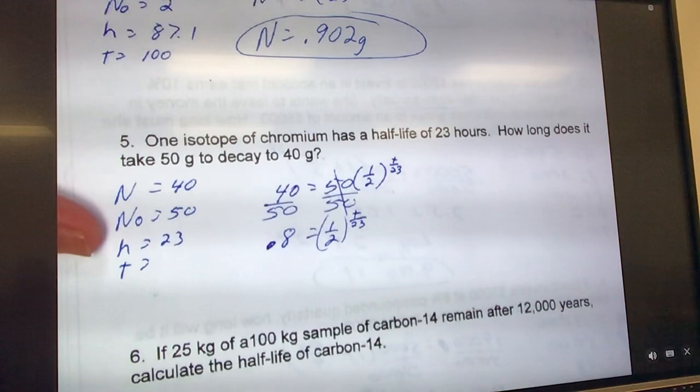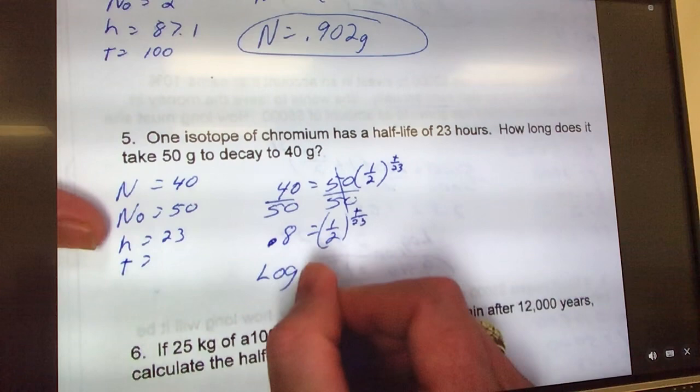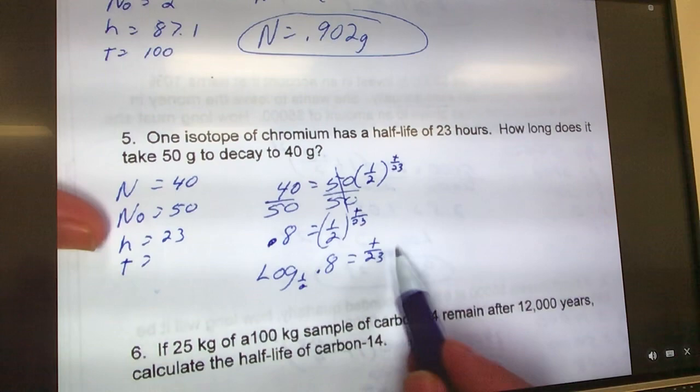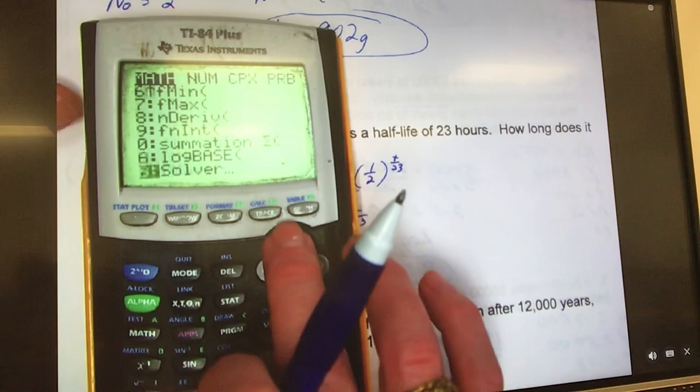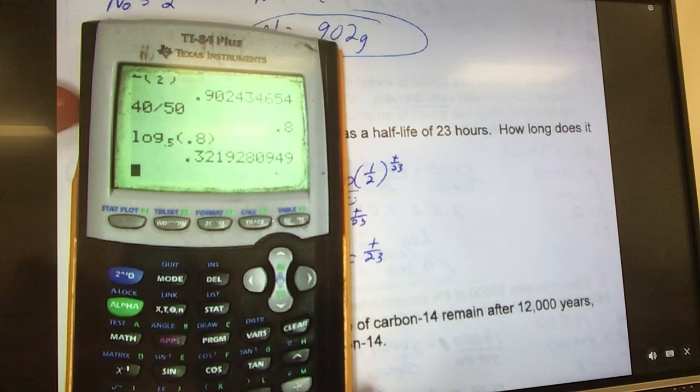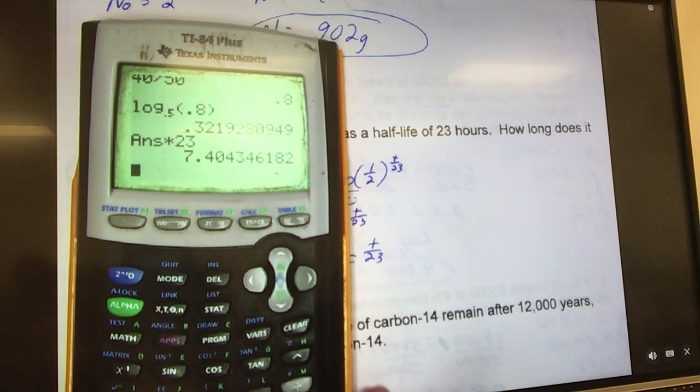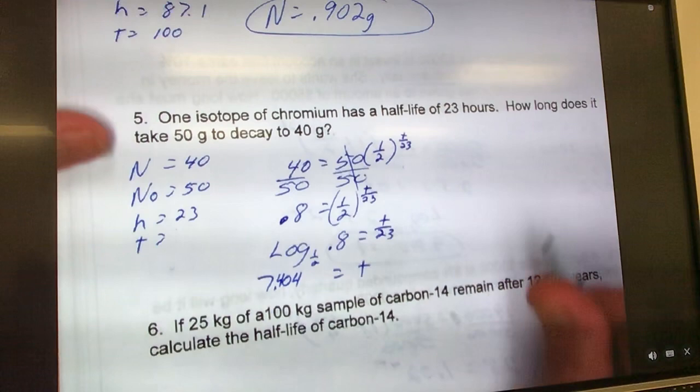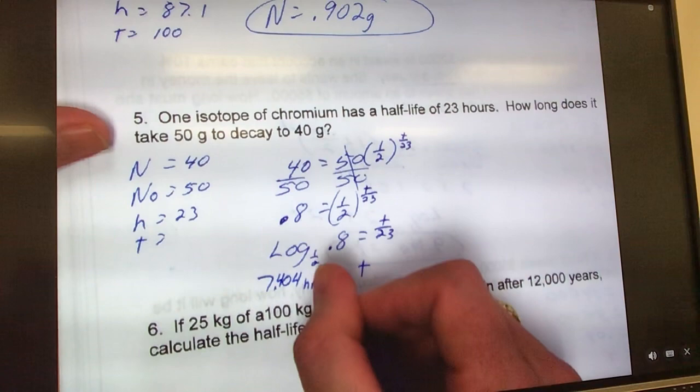So what is my base? What's my base on this guy? 0.5 or one-half. So log one-half, and then 0.8 equals T over 23. So now, whatever I get with this, in order to solve for T, I'm going to multiply this by 23. So math, log base 0.5 or one-half, however you want to do it, and 0.8, hit enter, multiply by 23, and it tells you 7.404. So T equals 7.404 hours.